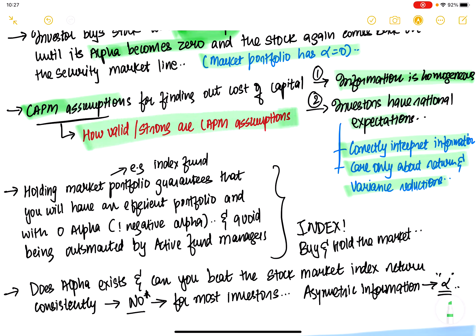These are very strong assumptions that CAPM makes. We're going to challenge whether these assumptions hold. Is information actually homogeneous? If it is, then there is no question of alpha. The best way to guarantee that active fund managers don't take advantage of you is by holding a market portfolio, because that guarantees a zero alpha — at least you will not get a negative alpha. A lot of investors actually earn a negative alpha, meaning they underperform the basic stock market index. So buying and holding an index is actually the best strategy for most people.